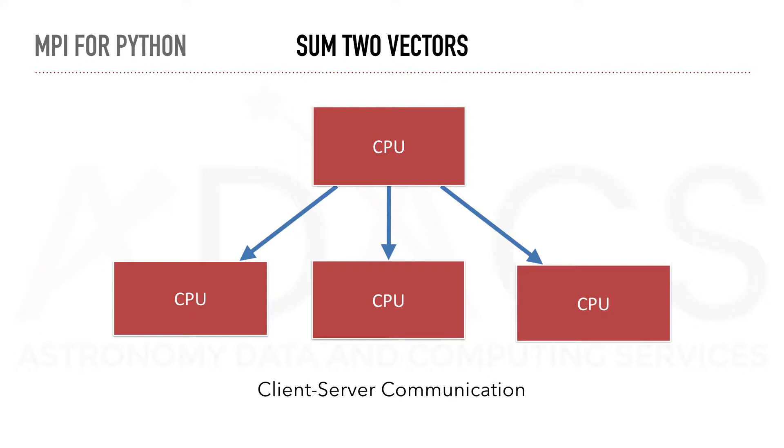In this case, a server will send messages to several clients. For example, in the case of MPI, the server would correspond to process 0 and the clients to any other processes. Once the task is completed on the client, each client can send their partial answers back to the server.